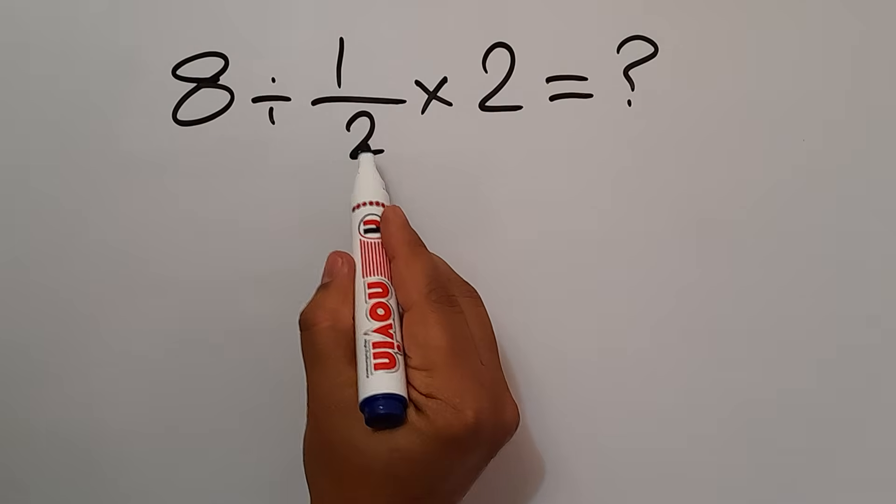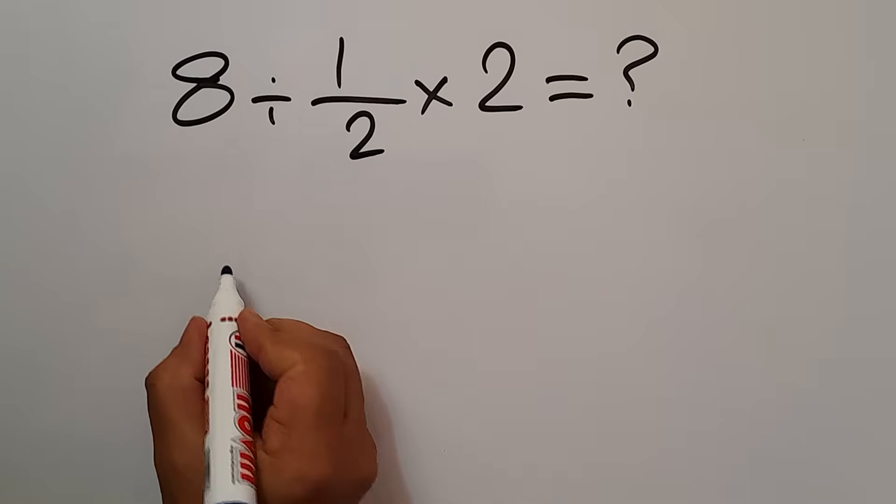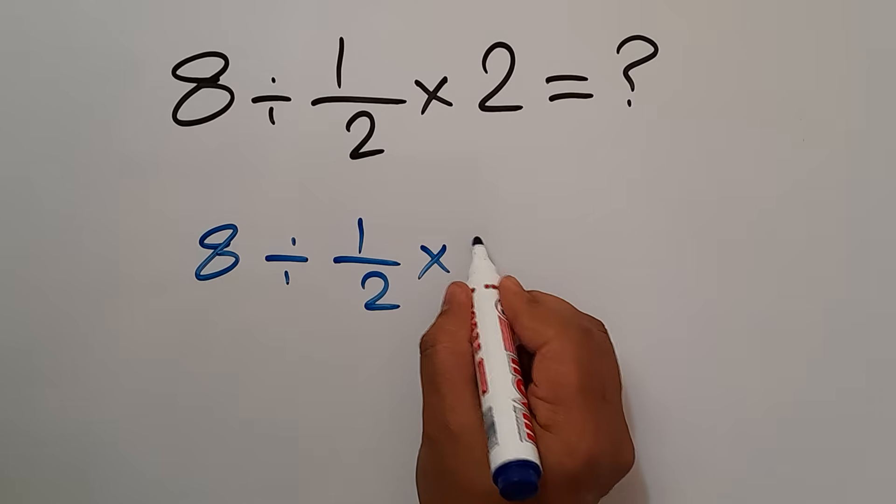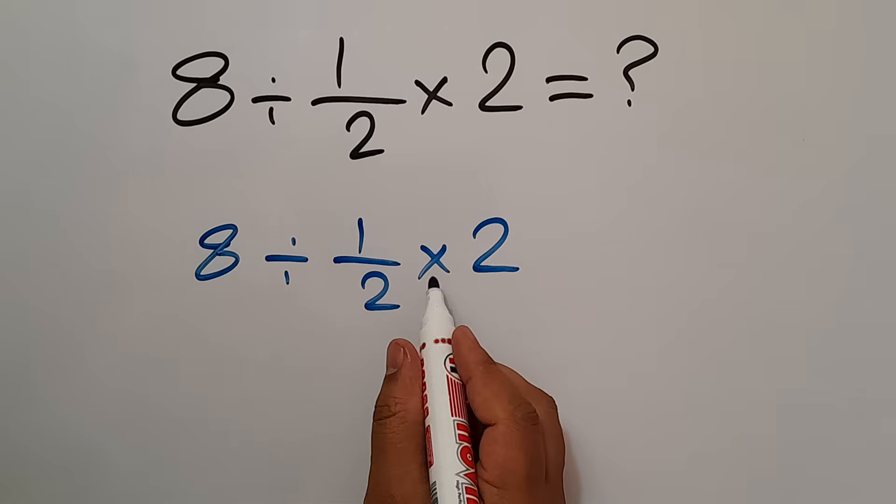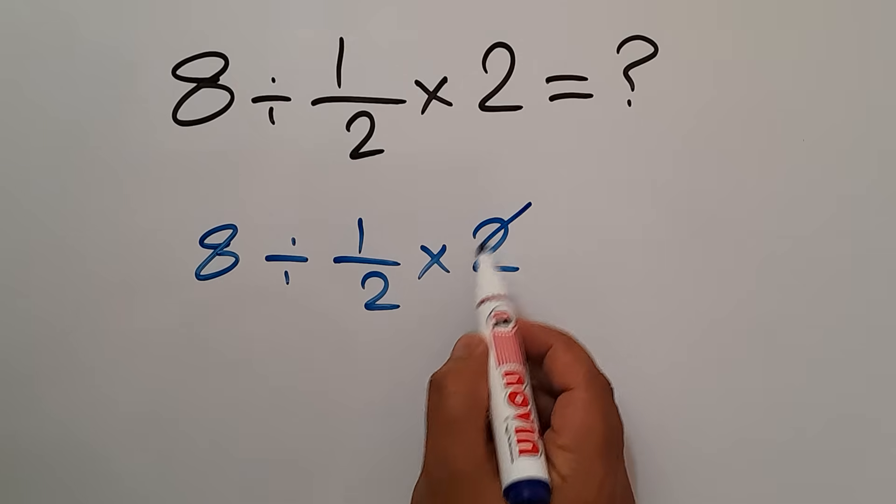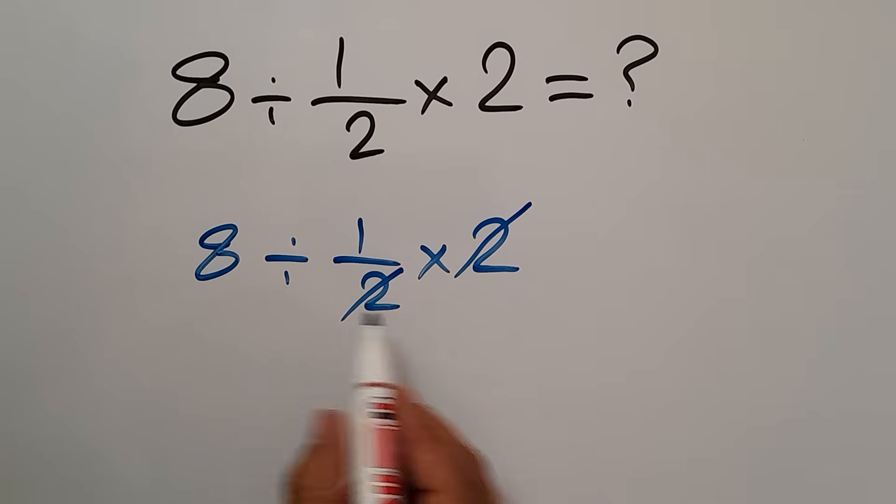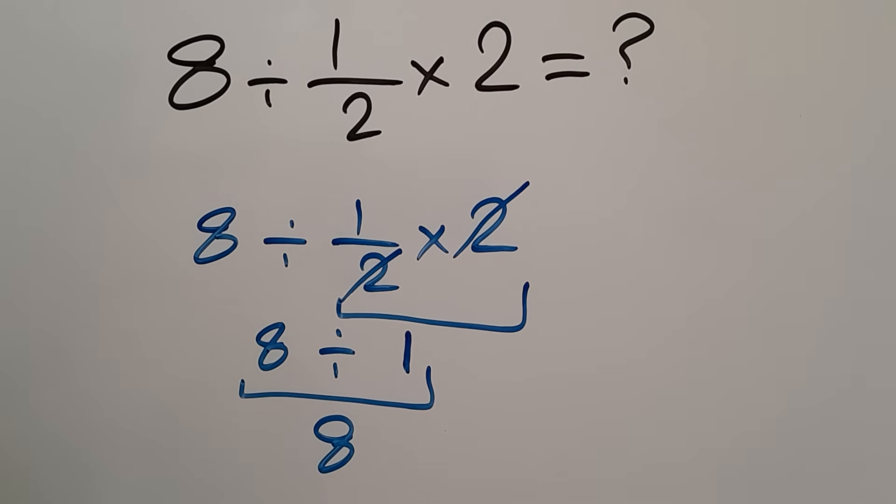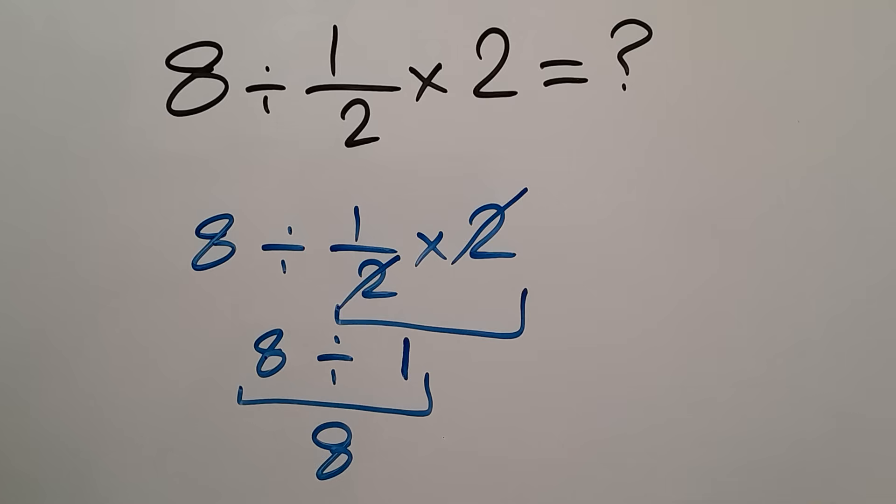8 divided by 1 over 2 then times 2. We have 8 divided by 1 over 2 times 2. We can easily cancel this 2 and this 2, so we have 1, and 8 divided by 1 gives us 8. But this answer is not correct because according to the order of operations,